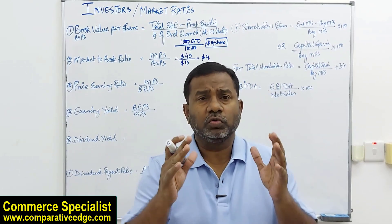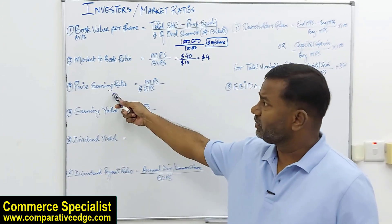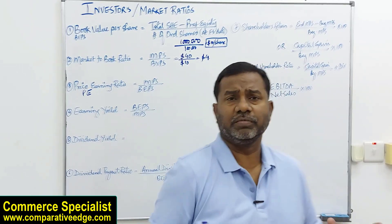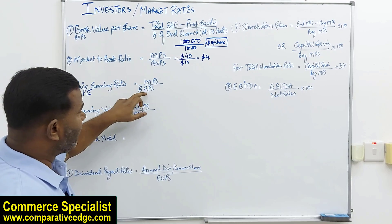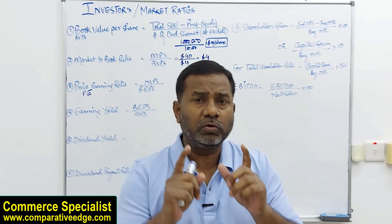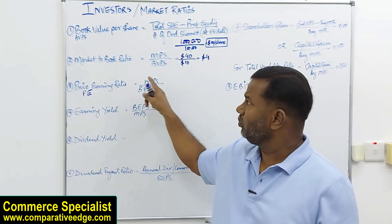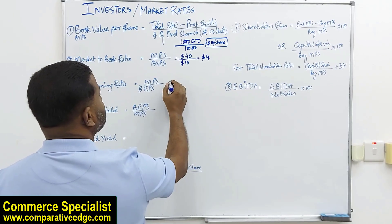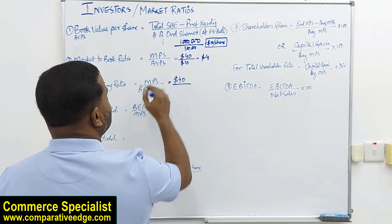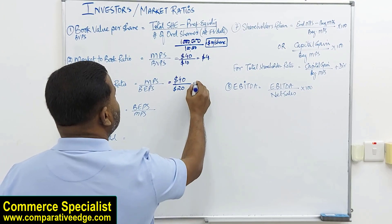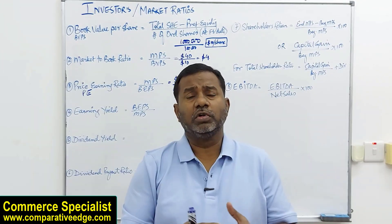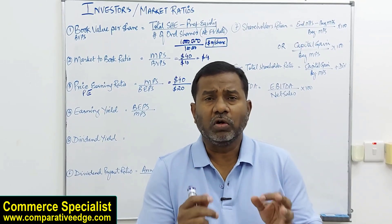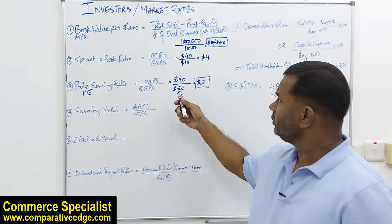The next important ratio before investing is the price earning ratio, also called the PE ratio. The formula is market price per share divided by basic earning per share — do not use diluted EPS. Taking market price as $40 and EPS as $20, the PE ratio comes to $2 per share. This means existing shareholders are paying $2 per share to continue receiving that earnings per share in the future.